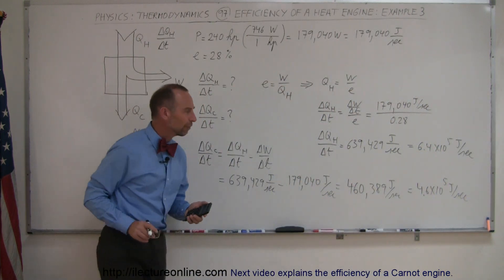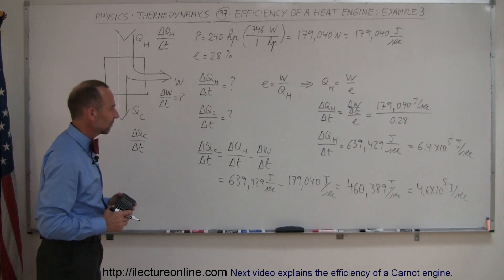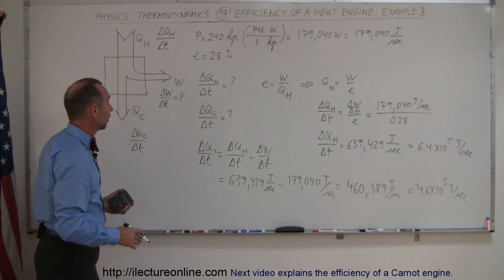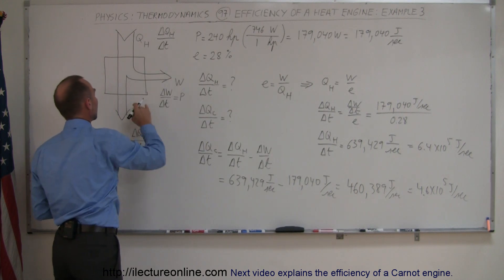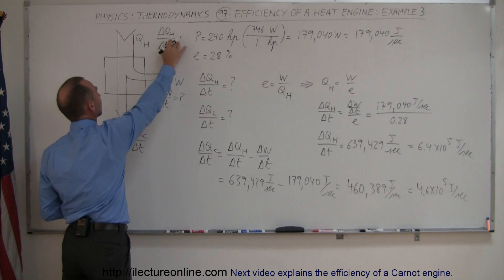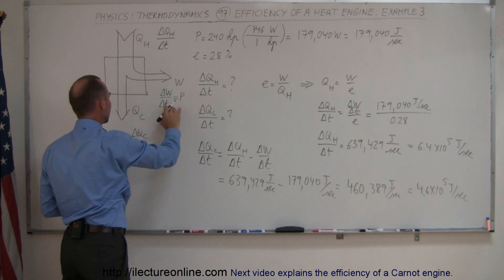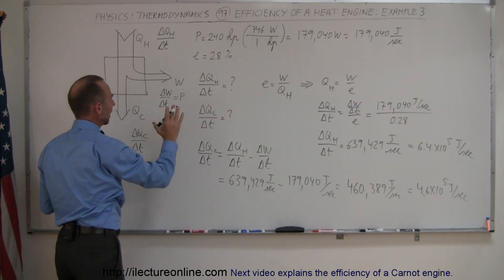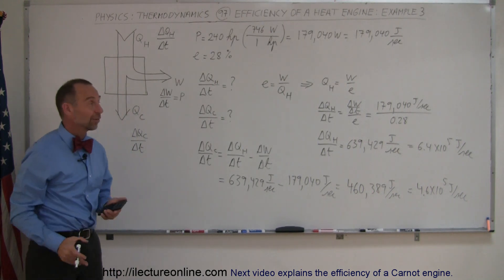And that's probably a more appropriate way of writing the answers with the correct number of significant figures. But notice, just like we had Q, W, and Q, we can have delta Q dT, delta W dT, and delta Q dT here, and you work the problem out exactly the same way.